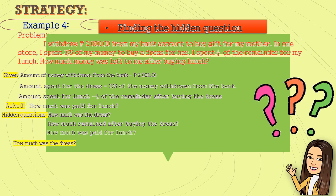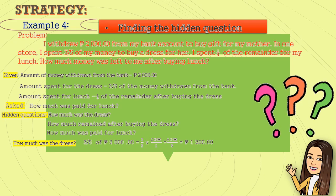First, let's answer this: How much was the dress? It's three-fifths of two thousand pesos. Or three-fifths times two thousand. Or two thousand over one. That is six thousand over five. Or six thousand over five. That's equal to one thousand two hundred pesos.